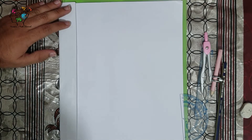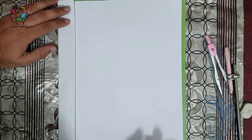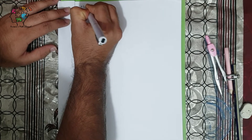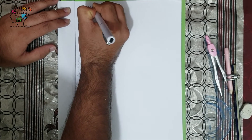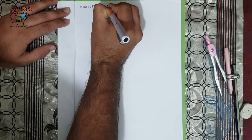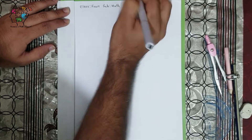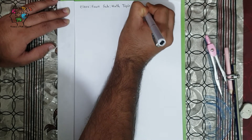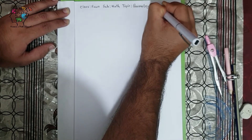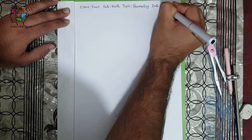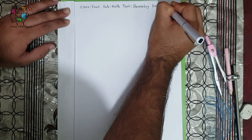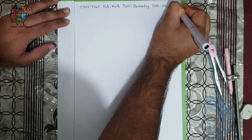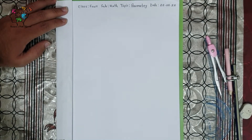Hello students, welcome to today's online class. We write our today's topic and date: Class 4, subject Math, today's topic is Geometry. Today's date is 22 August 2020. All right, let's begin.